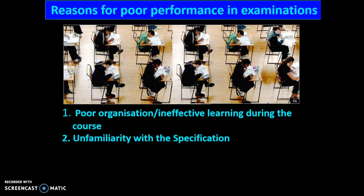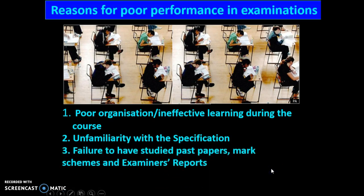Another reason might be that you don't really know what's in the specification. Our textbook, which is an OCR textbook, is very good, but it isn't necessarily what's in the WJEC or EDUQAS specification, so you need to know that too. Have you looked at past papers, mark schemes, examiner's reports? If you're doing A2 then of course that makes it a lot easier, but even for AS with the new specification you can prepare yourself for this.